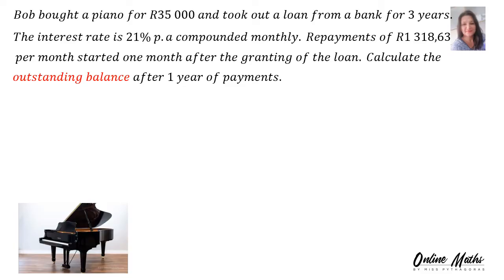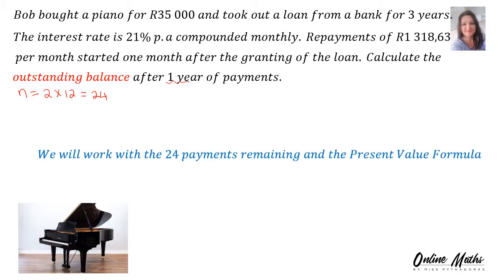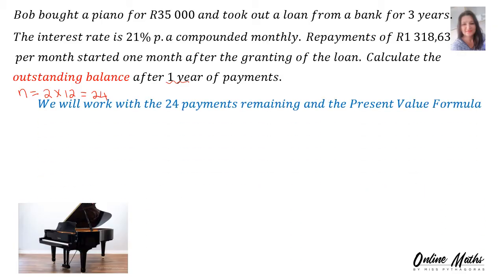Remember, the total time for this loan is three years. Therefore, the outstanding balance after one year means the remaining time will be two years times 12 monthly payments, which equals 24. We will work with the 24 payments remaining and the present value formula.